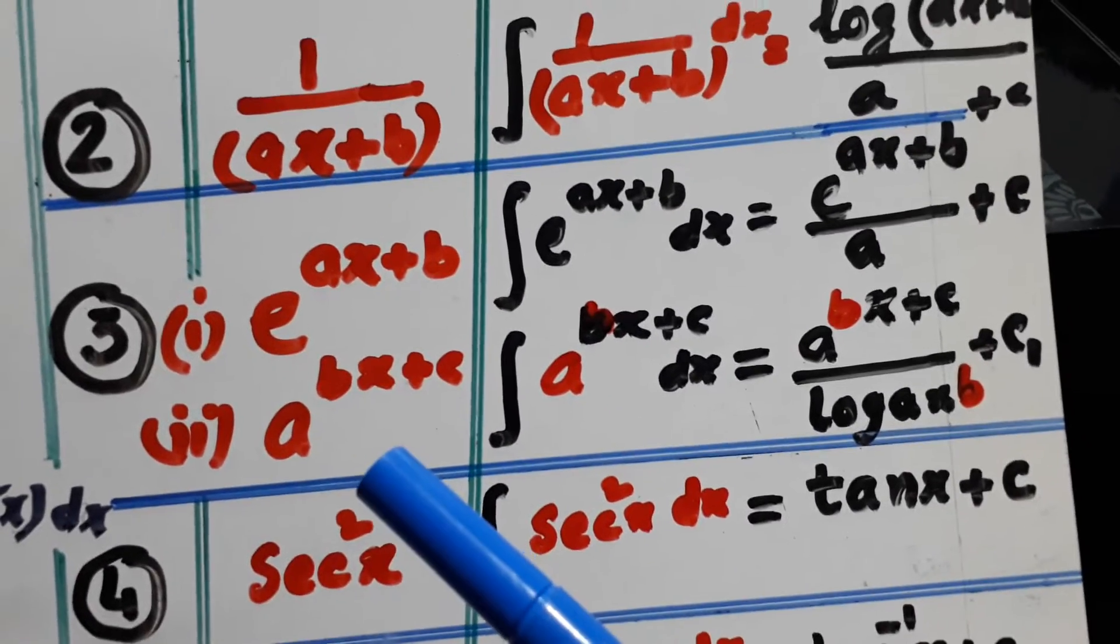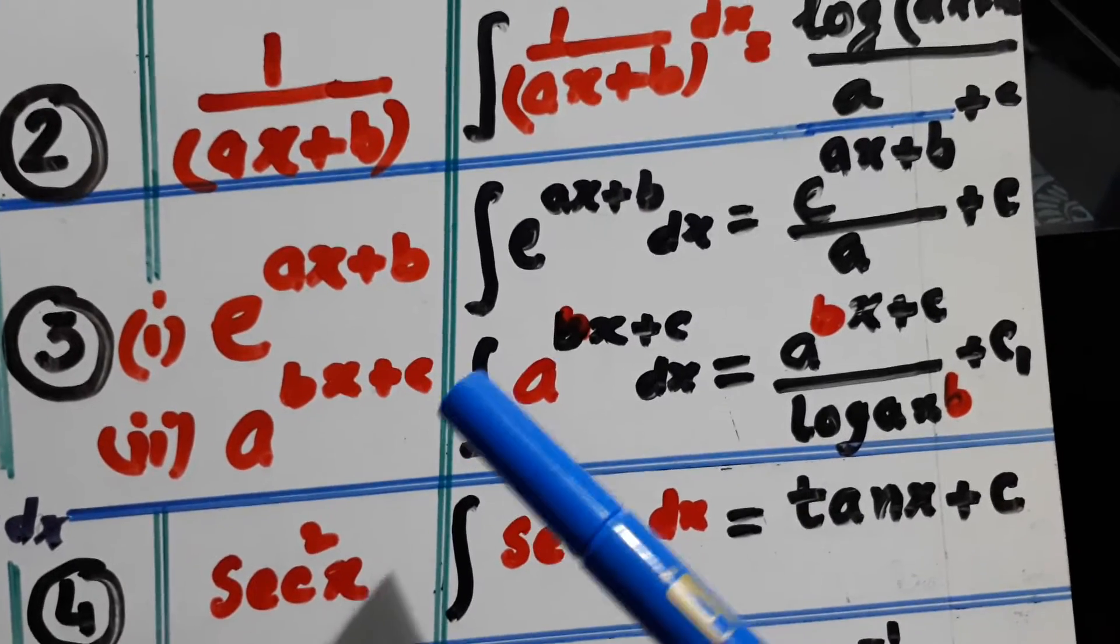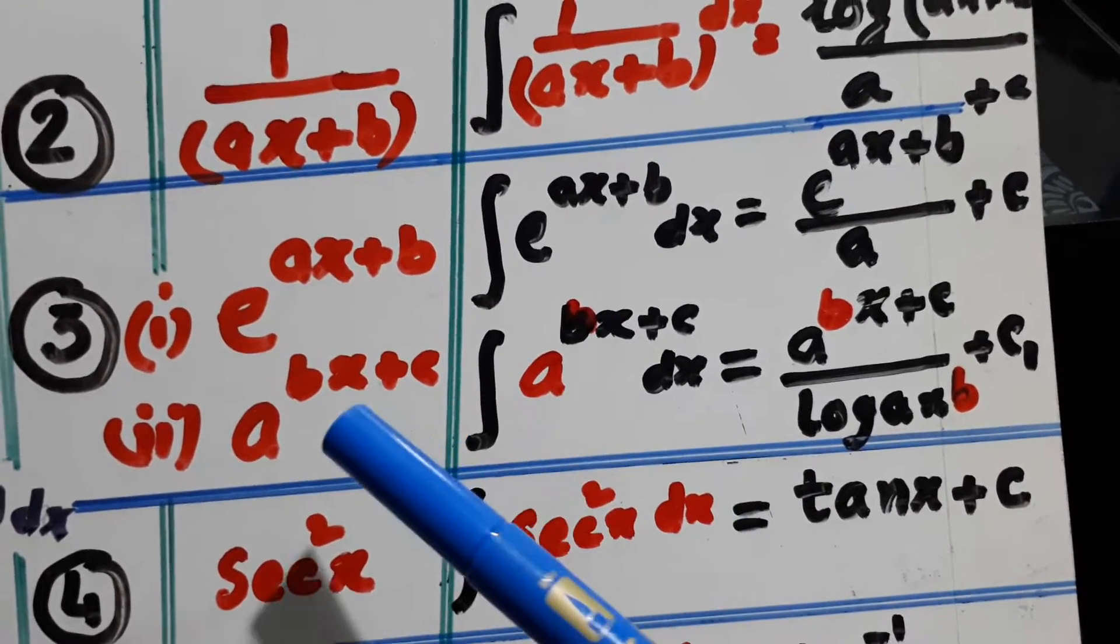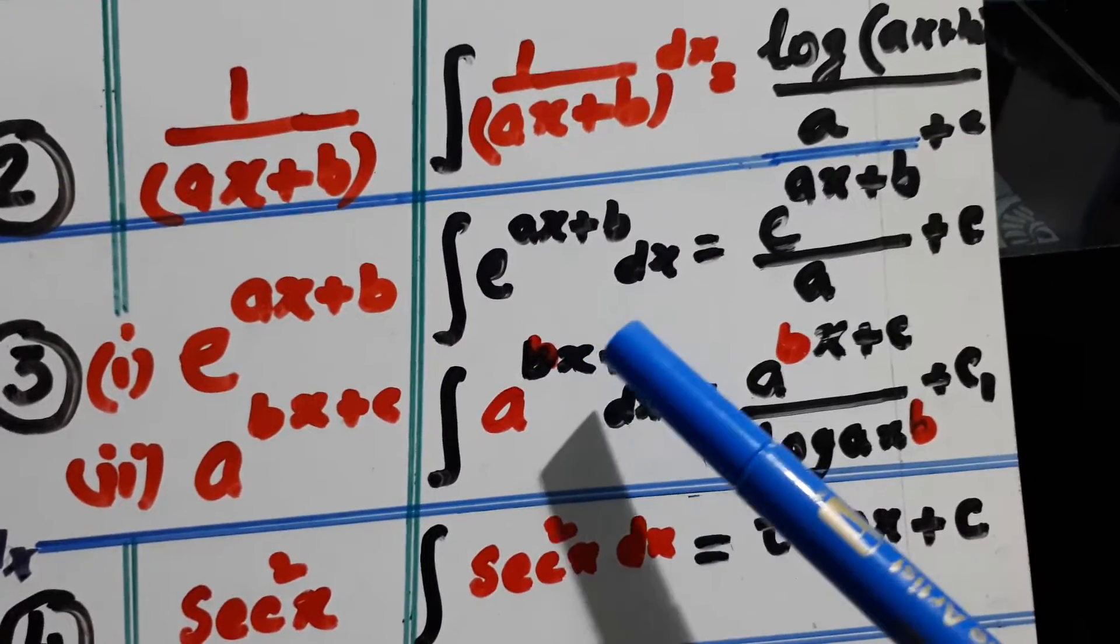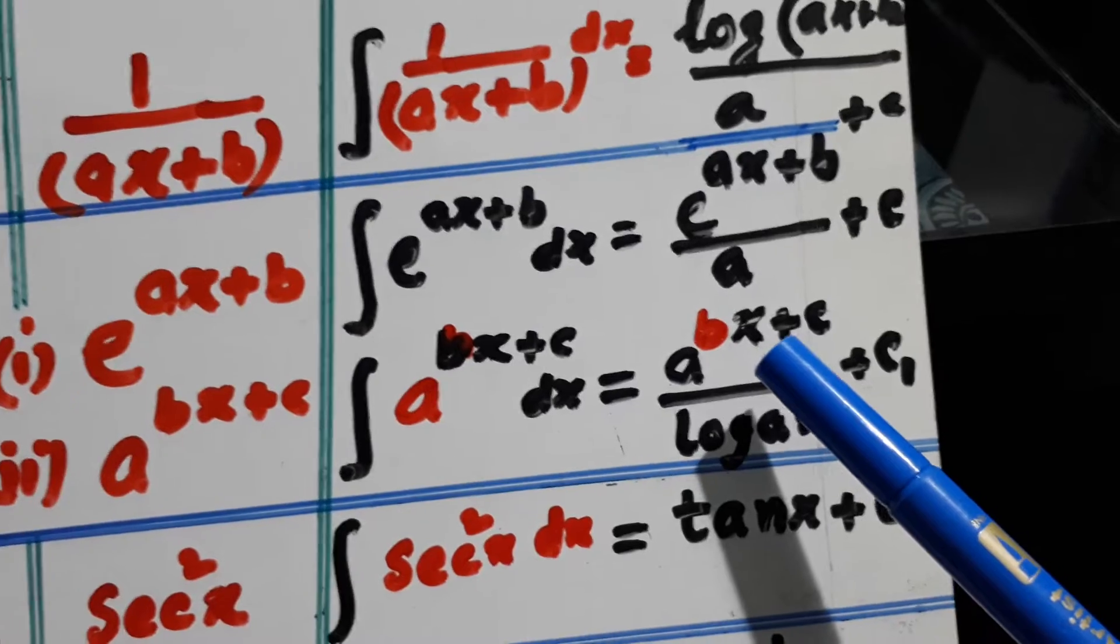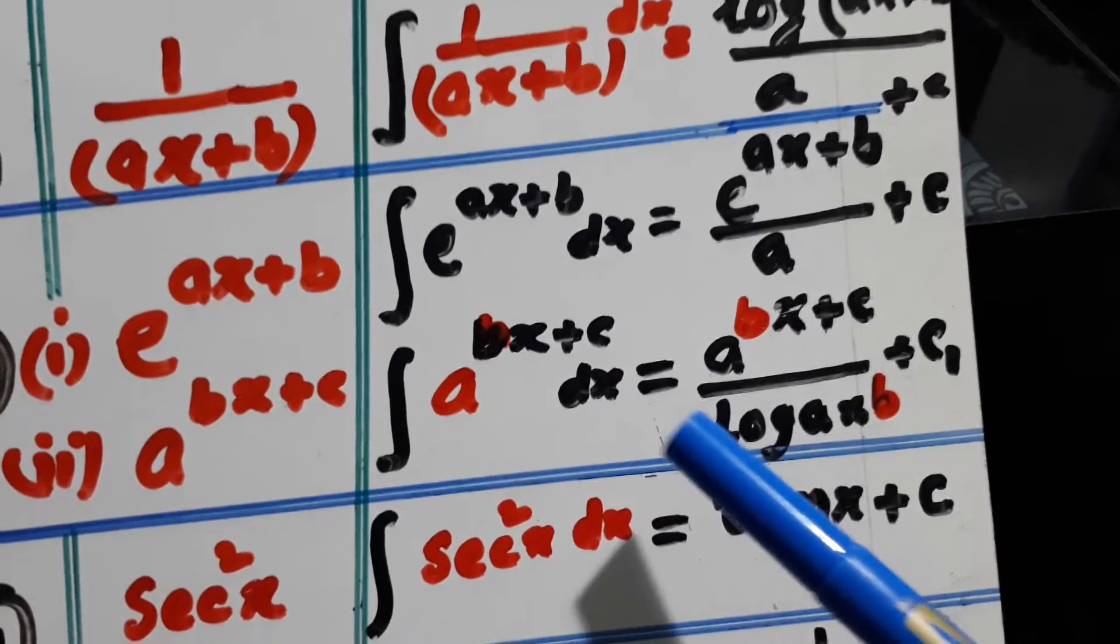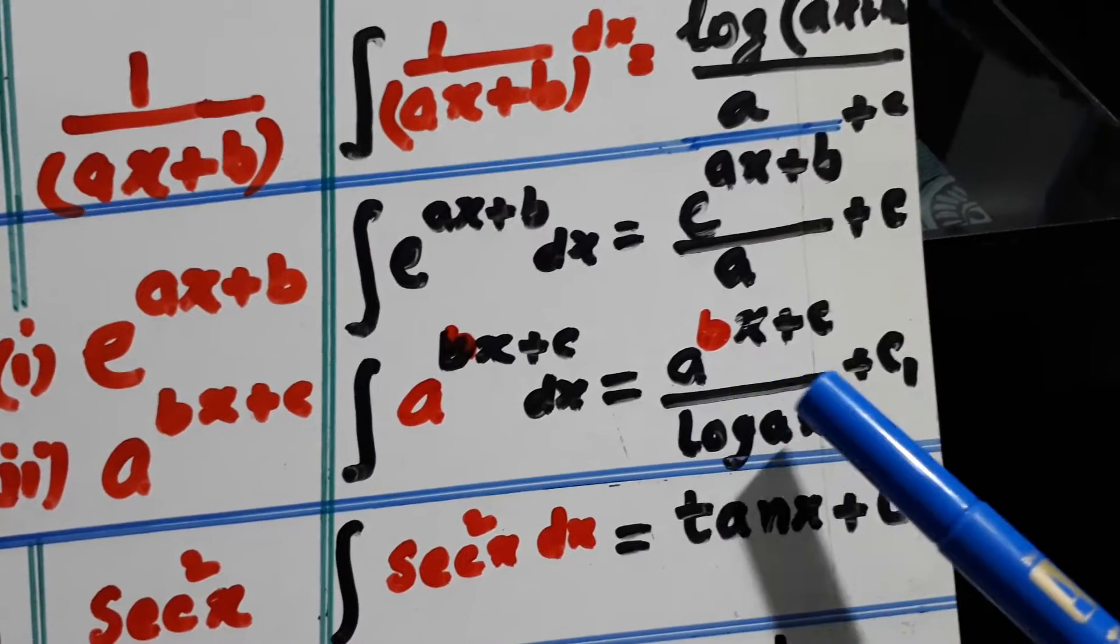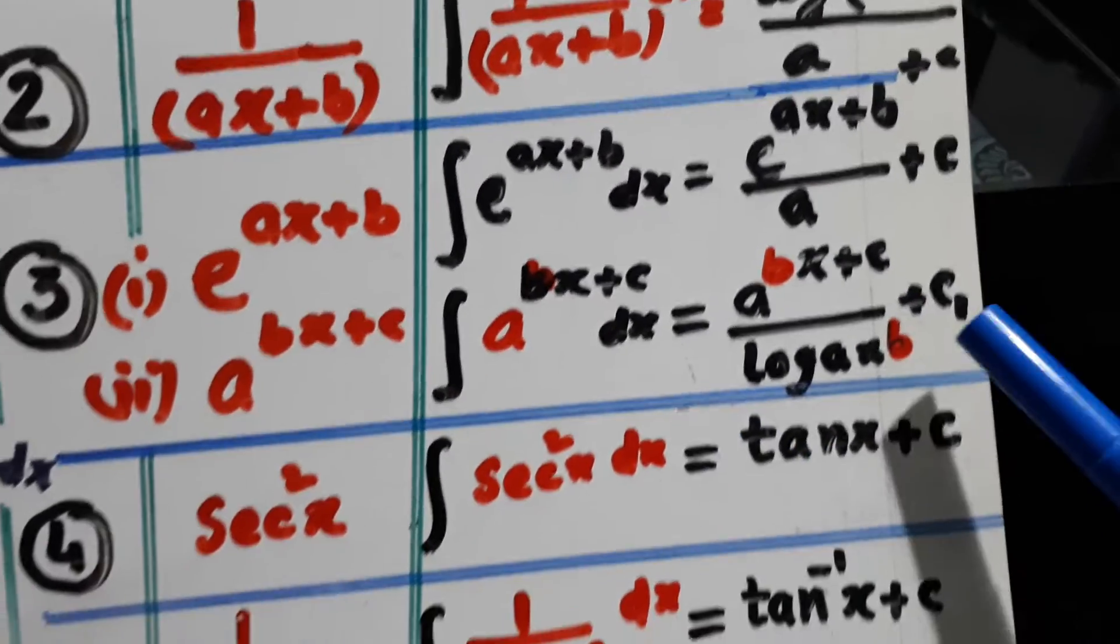Similarly, second one is a^(bx+c). So it is the input and output is integration of a^(bx+c). And this is equal to a^(bx+c) over log(a) into the derivative of (bx+c), that is b, plus c.